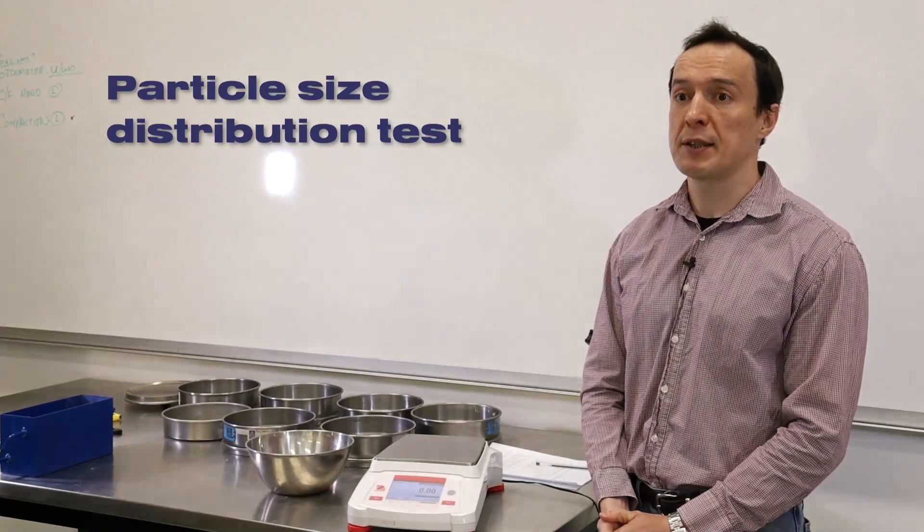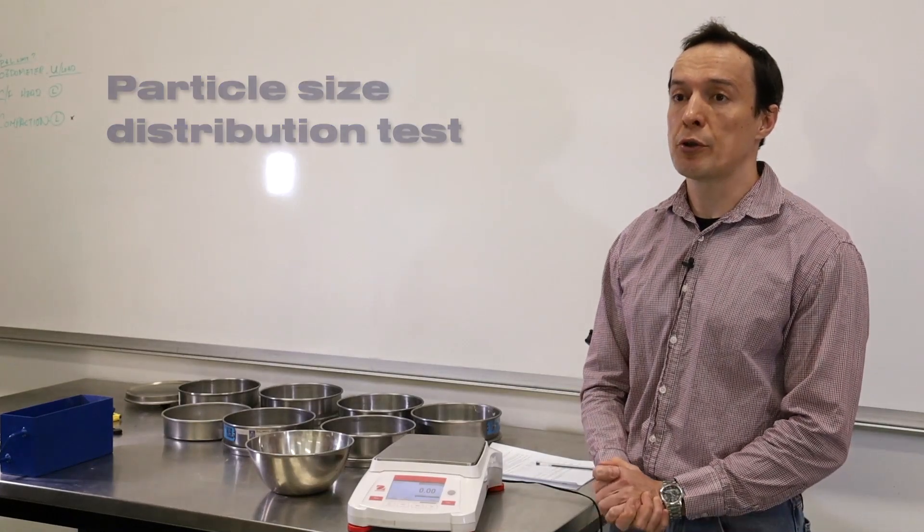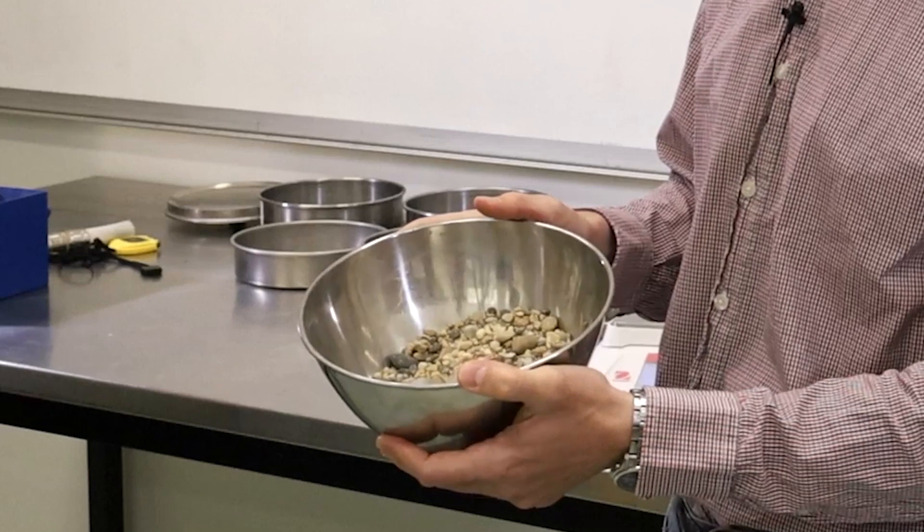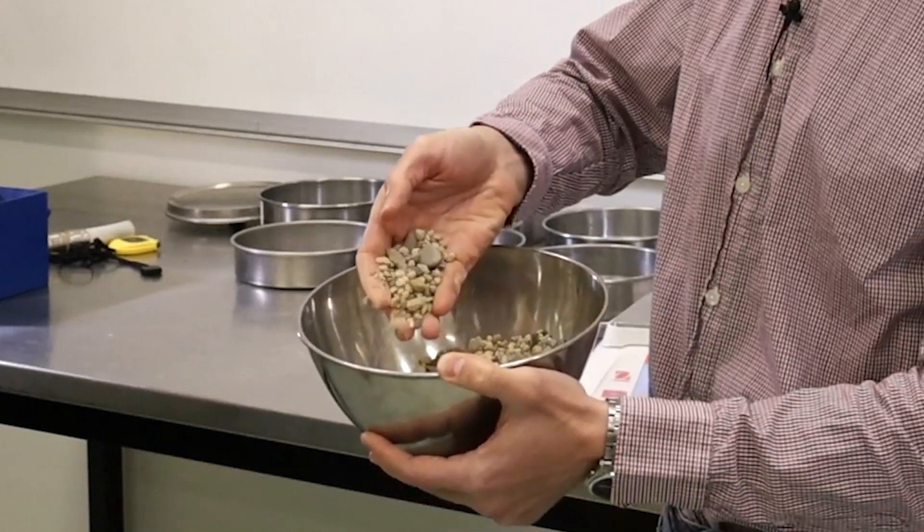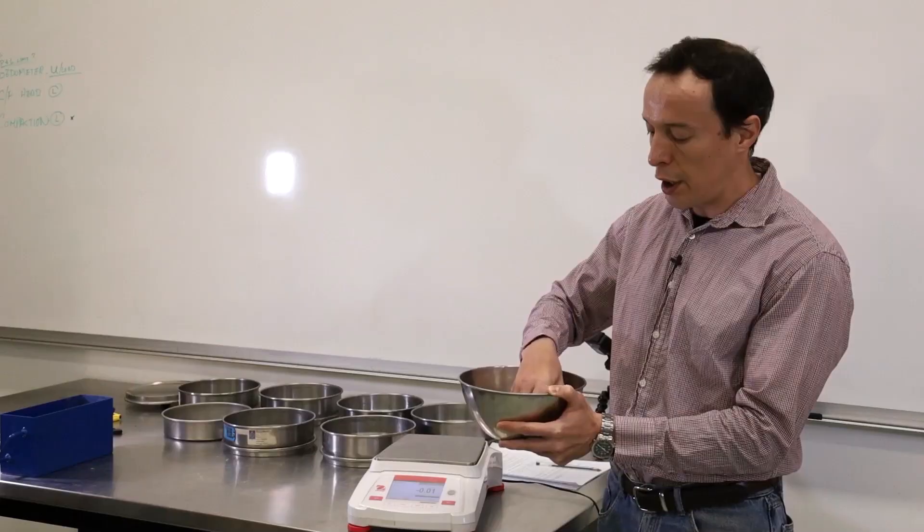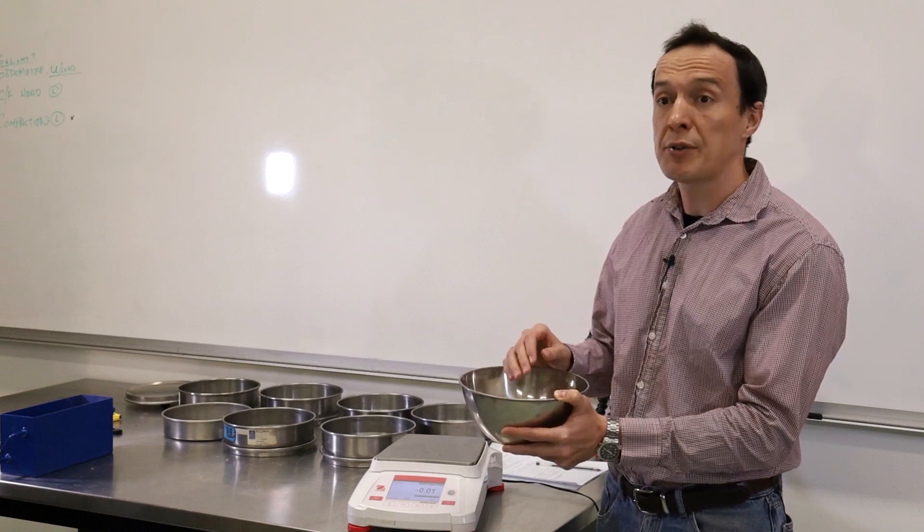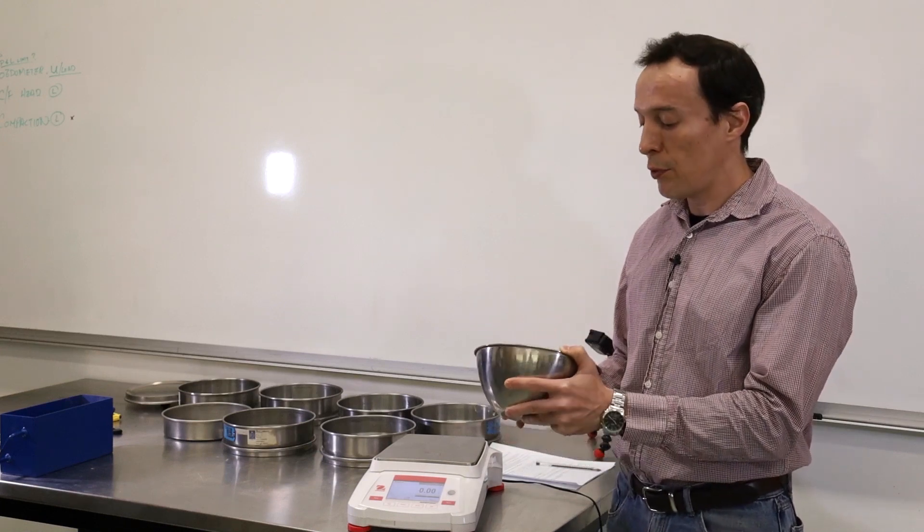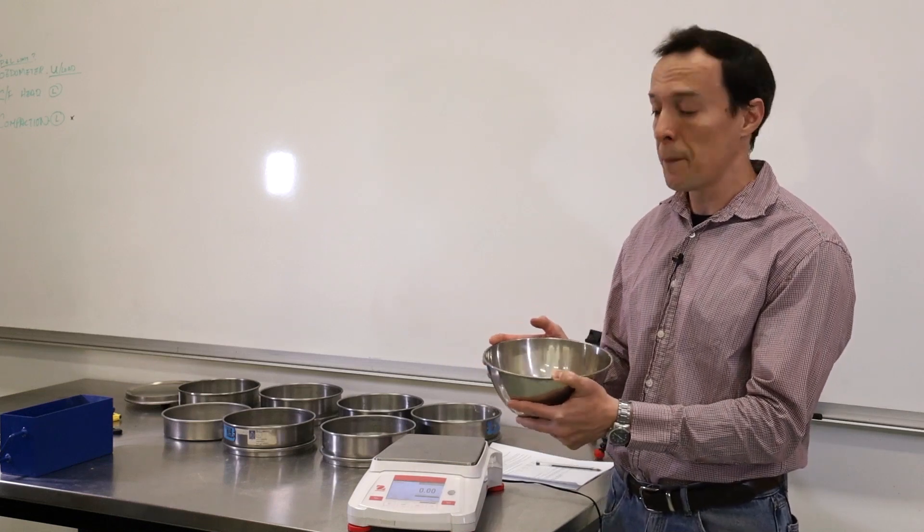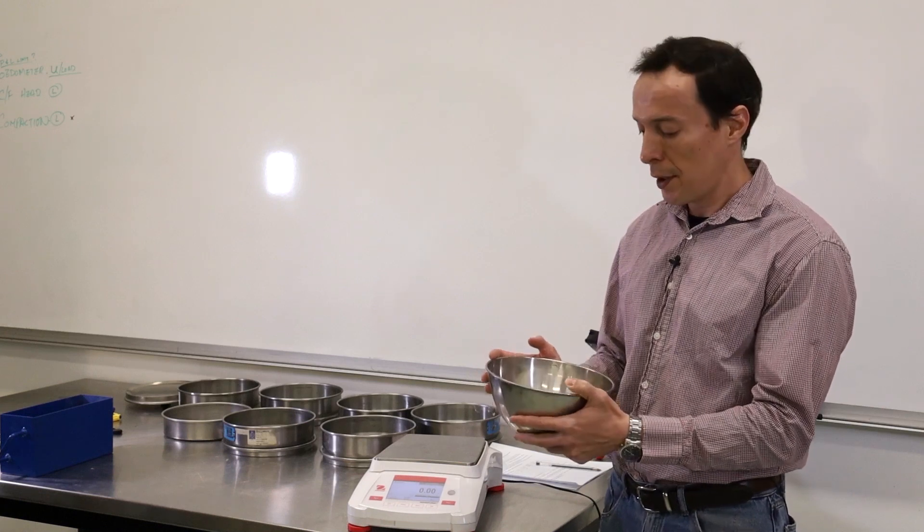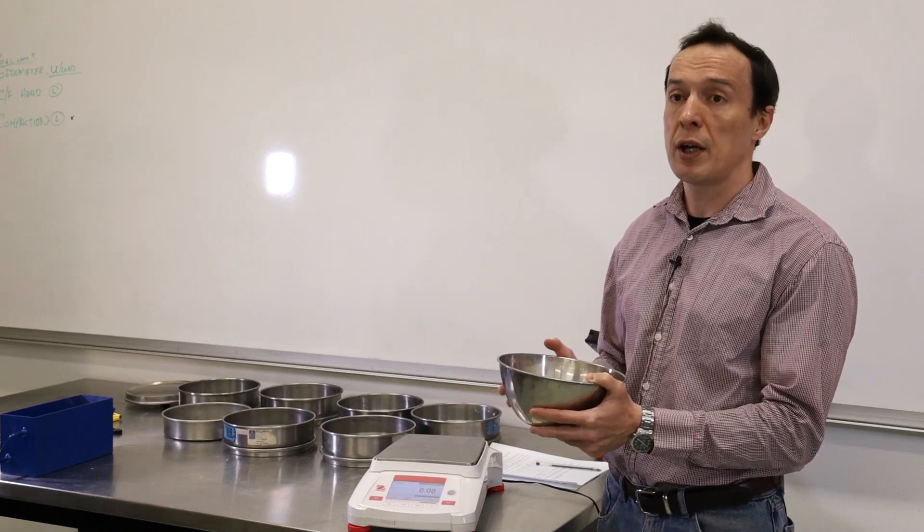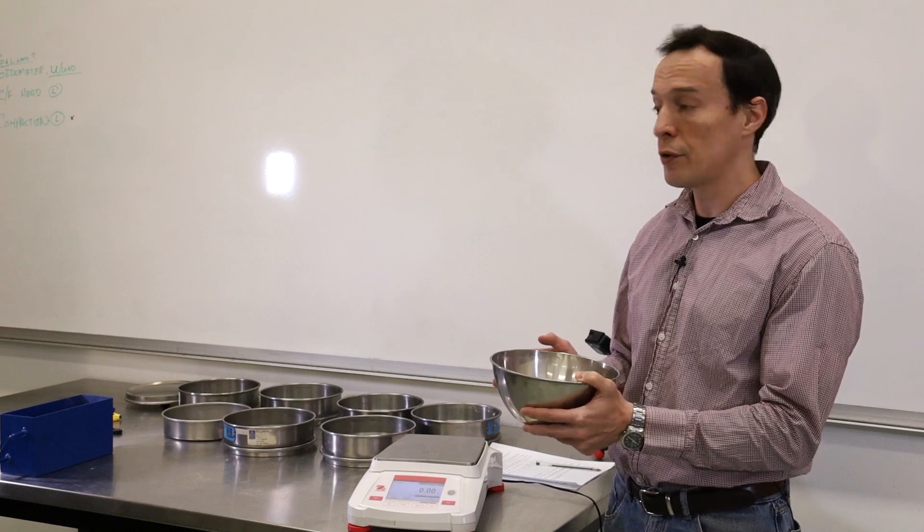Today we'll do particle size distribution test, also known as sieve analysis. If you look at soil that we collect during site investigation, you will notice that it has different particles on it. It can have very large particles like gravel, and it also has sand and sometimes fine particles. So what we would like to do is to know how much gravel, how much sand and fines we have in each soil, and after that we can classify the soil. To do that we need to separate them into sizes, and the test that we'll do today will help us achieve this goal.